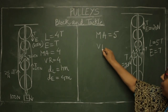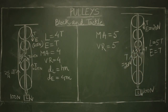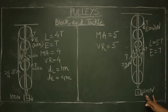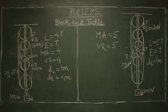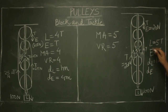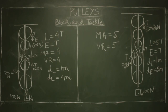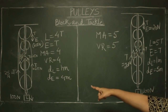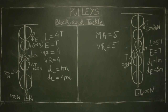Mechanical advantage equals velocity ratio equals five. This means that if I have to lift the load by one meter, I will have to pull the rope by five meters — the speed is slower than in the previous case where mechanical advantage was four. So that is the basic idea of the block and tackle system of pulleys.